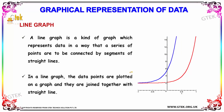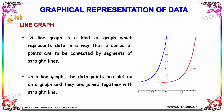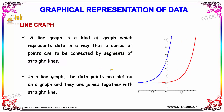Now let's discuss about the line graph. A line graph is a kind of graph which represents data in which a series of points are connected by segments of straight lines. In a line graph, the data points are plotted on a graph and they are joined together with a straight line.